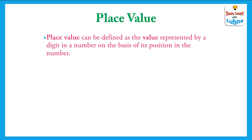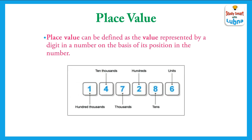Here an example is given. You can see a six digit number — 1, 4, 7, 2, 8, 6 are the digits of the six digit number and each digit has some particular value. The place value of six is ones, place value of eight is tens, place value of two is hundreds, place value of seven is thousands, place value of four is ten thousands, and place value of one is hundred thousands in the international number system.